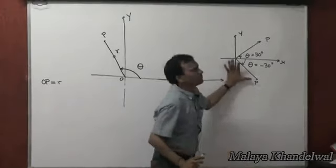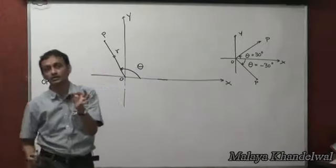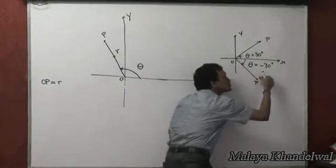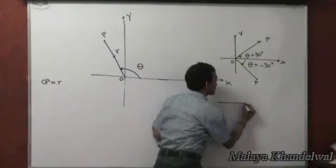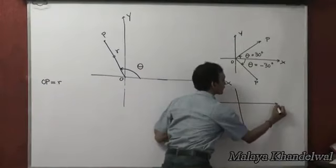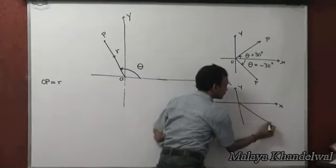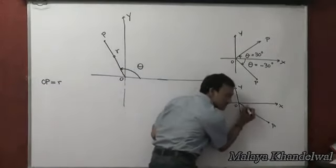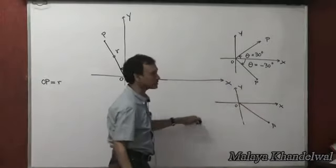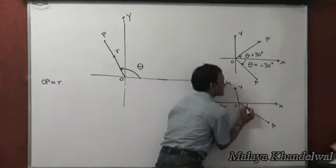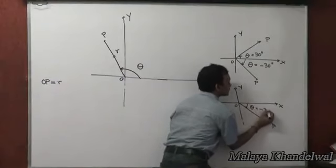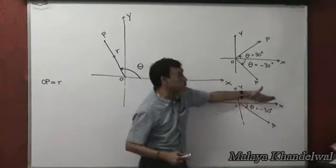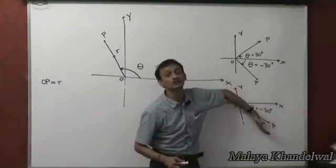However, there are very many angles that describe the same position of the rotating line. For example, look at this position of the rotating line. One way to describe it: suppose this angle is 30 degrees in magnitude, so theta equals minus 30 degrees, meaning you go 30 degrees clockwise with respect to the positive direction of the x-axis to locate the rotating line.